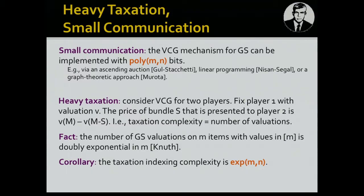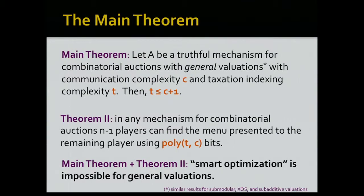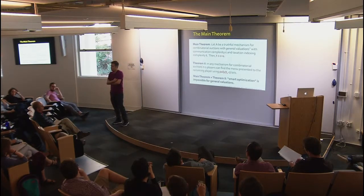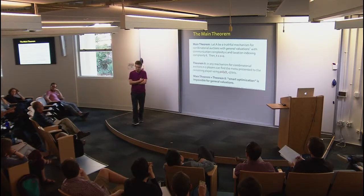Now we can give a more precise statement of the theorem. Let A be a truthful mechanism for combinatorial auctions with general valuations. Let c be its communication complexity and t its taxation indexing complexity. Then t ≤ c + 1. Connecting back to the previous example: when this theorem applies we're talking about exponential taxation already implying exponential communication.